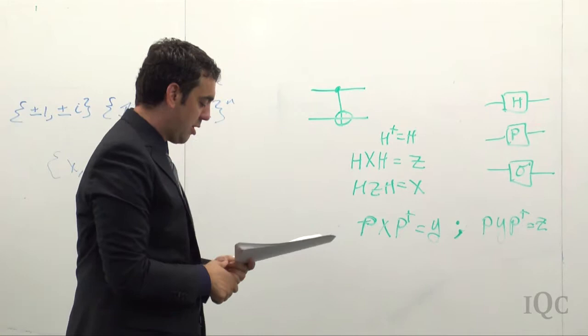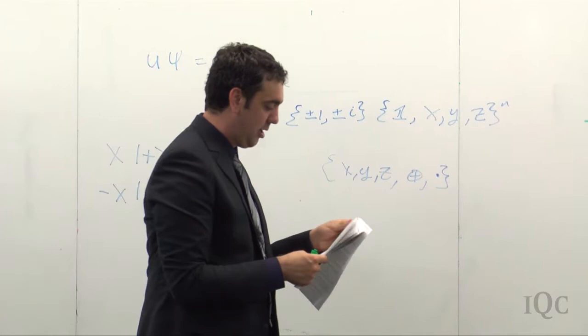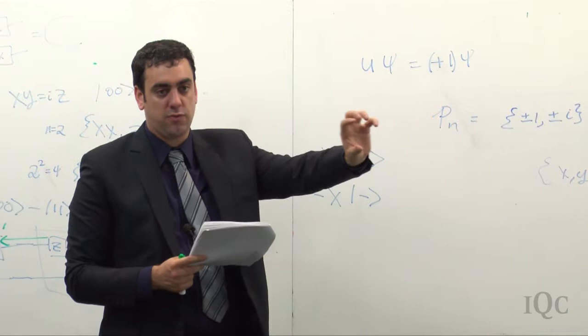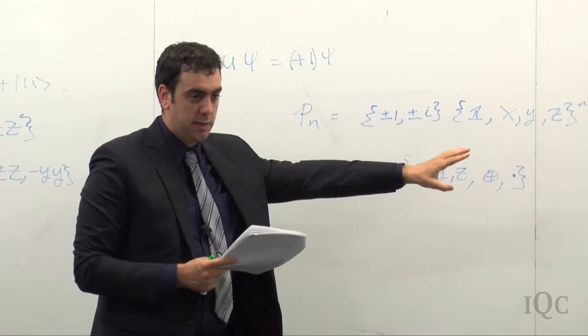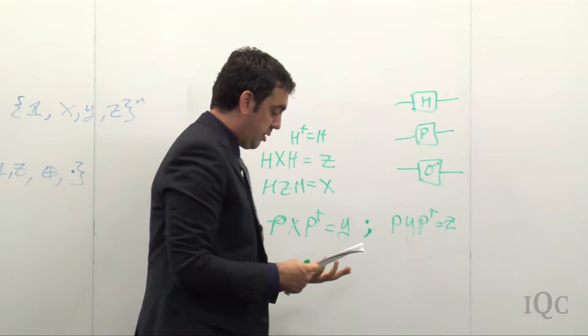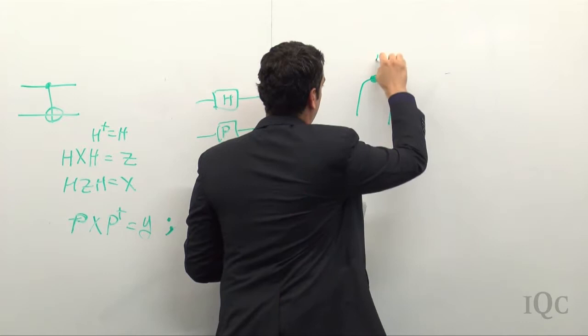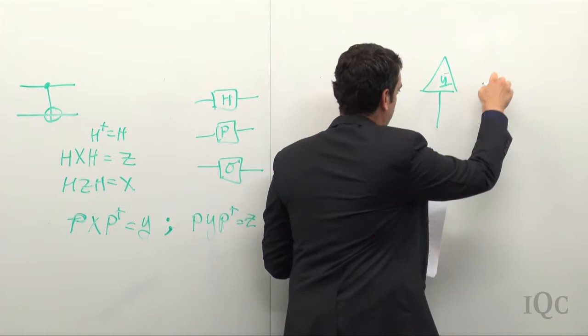Clifford circuits generate the Clifford group. They stabilize the Pauli algebra — when you conjugate P_N by any stabilizer circuit built out of Clifford operations, it goes back to itself. From that, we go into stabilizer tensor theory, and that set of tensors — copy, XOR, H, and related tensors — is sufficient to generate all stabilizer tensors. A subclass of those is the stabilizer circuits we are familiar with. The proof is in the notes.